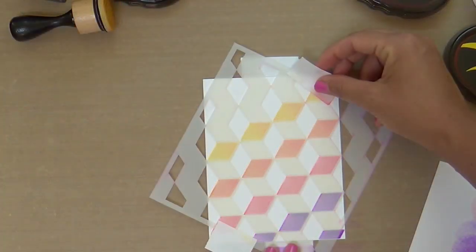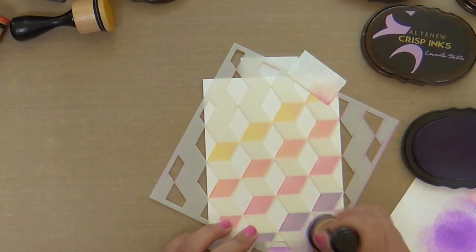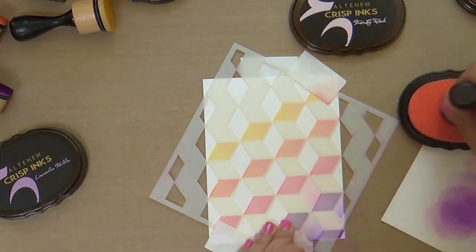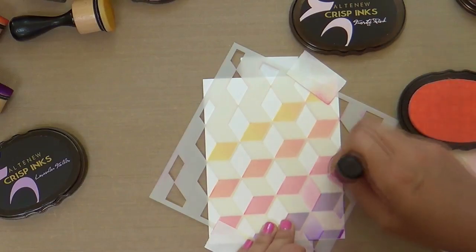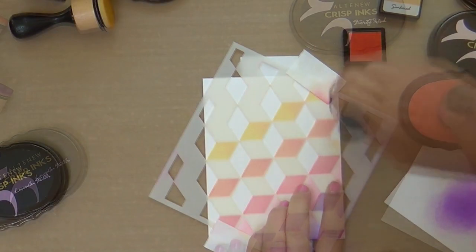Now I'm going to rotate my stencil. This time the diamond shapes are going straight up and down and I'll begin ink blending. This time I'm starting with lavender fields, so it's a lighter shade than midnight violet. Now I'm doing a row of frosty pink which is the lighter shade from coral berry.